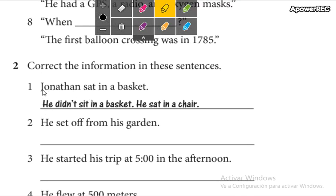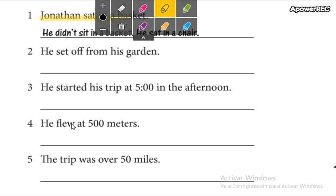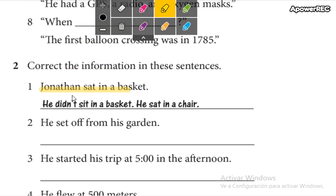And here you correct information. Todas estas oraciones están mal. Tienen que corregirlas. For example, Jonathan sat in a basket. No. So he didn't sit in a basket. He sat in a chair.